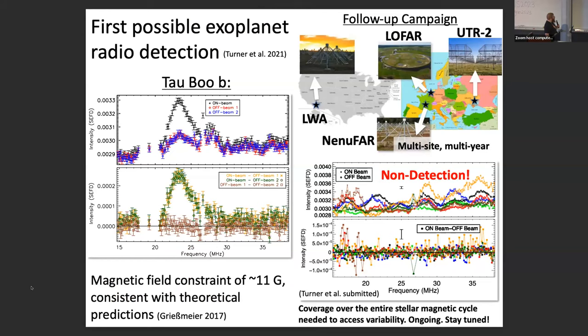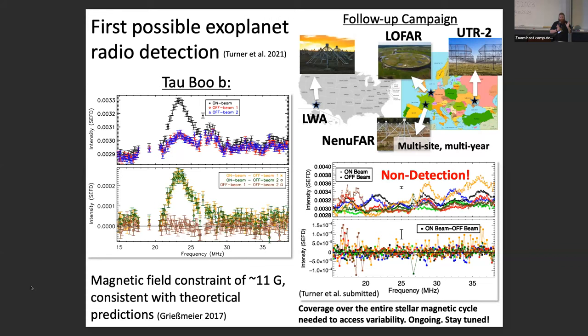We think we had a possible detection of Tau Boo b — a big hot Jupiter and one of the first hot Jupiters discovered — with a 8.6 sigma detection when comparing our on-beams and off-beams. This allows us to constrain the magnetic field of the planet, which is consistent with predictions and very similar to Jupiter. In my poster, we discuss a large two-year follow-up campaign using many telescopes: LOFAR in the Netherlands, NenuFAR in France, LWA in New Mexico, and UTR-2 in Ukraine. Please come to my poster to hear what we found — or did not find. Thank you.